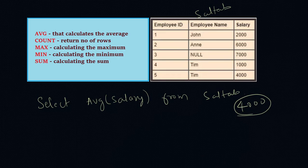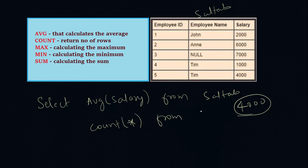Count is used to count the number of rows. In some tables there are many records, and we want to know how many at any given time. You write SELECT COUNT(*) FROM salary_table. This will return 5 because there are only 5 records.